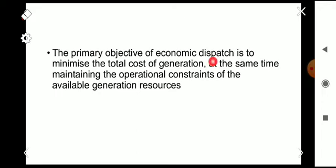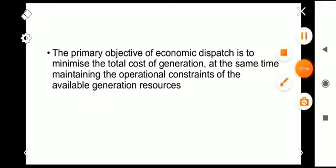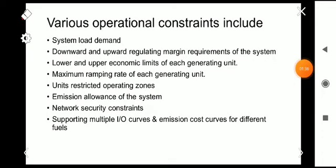The primary objective of economic dispatch is to minimize the total cost of generation, at the same time maintaining the operational constraints of the available generation resources. There are around eight operational constraints.